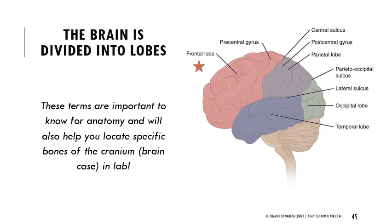The parietal lobe is moving more posteriorly but not at the back - transitioning from front to back and top of the head. The occipital lobe is at the back of the head. The temporal lobe is where your temples are, on either side. You should know frontal, parietal, occipital, and temporal and the rough position of those.